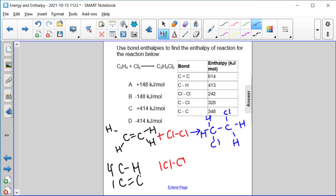And then our products. We have one carbon-carbon single bond, four carbon-hydrogen single bonds, and two carbon-chlorine single bonds.